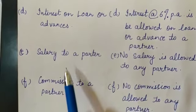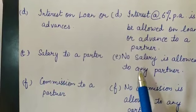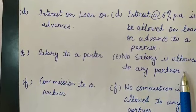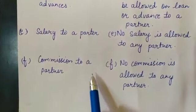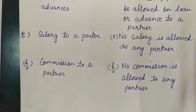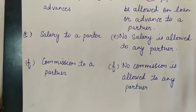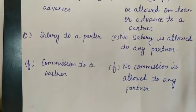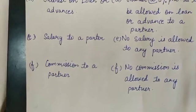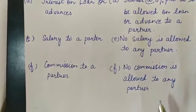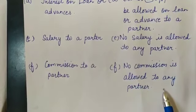Next point is salary to a partner. Agar partnership deed nahi hai, us time partners nu salary nahi ditti jaegi. Next point is commission to a partner. Jo profit bachde jande han, firm partners nu una profits wich se commission provide kar di hai. But if there is no partnership deed, then no commission is allowed to any partner.